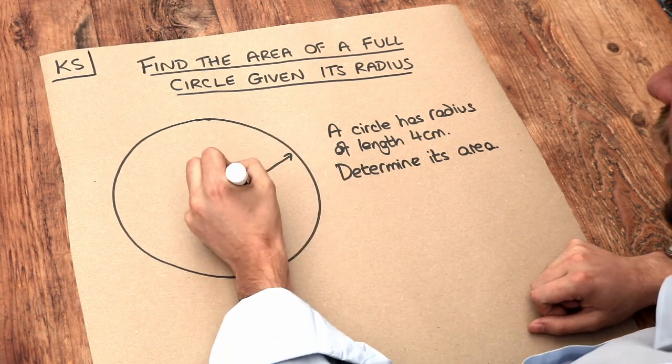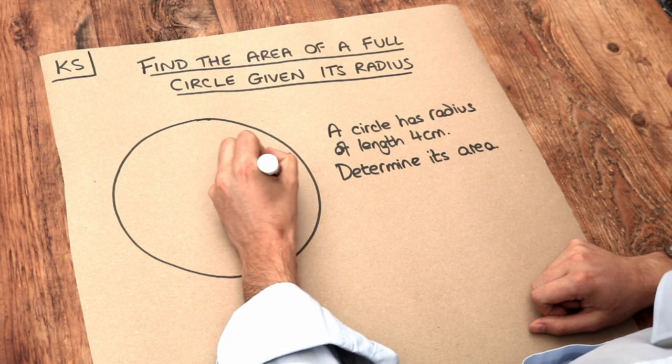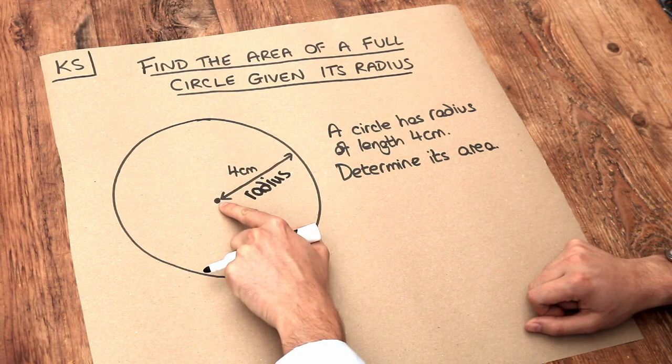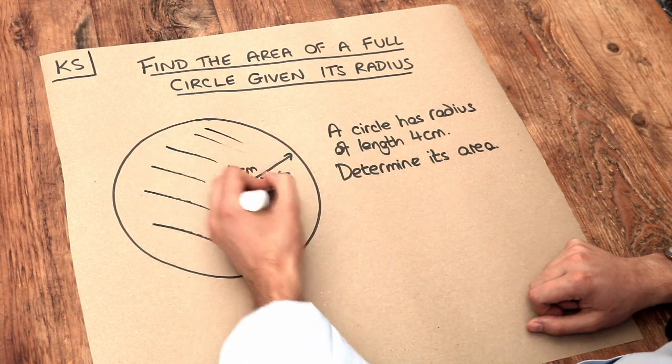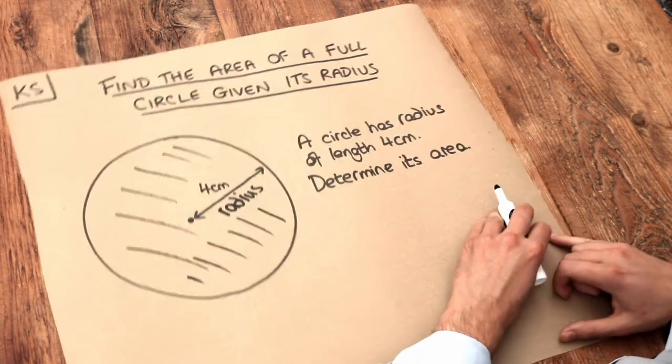This is the radius of the circle here, and that is the line from the center of the circle to the circumference of the circle, so the perimeter of the circle here. And we want to find the area, how much space this circle takes up.